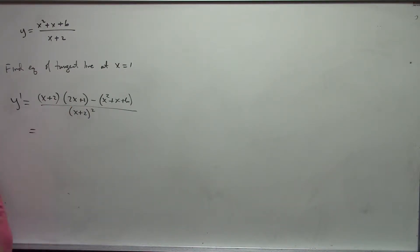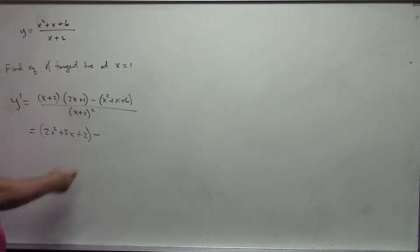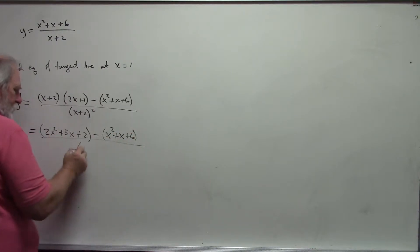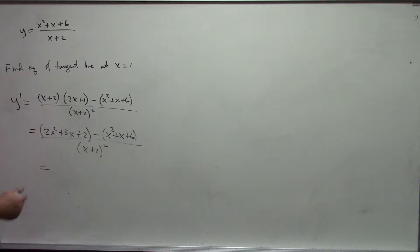So we'll simplify this a little bit, foil this out: 2x squared plus 5x plus 2, minus, I'll leave this, and then I'll combine. Make sure you distribute the minus sign.